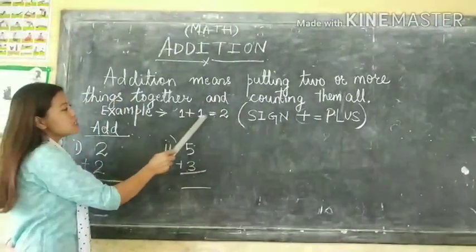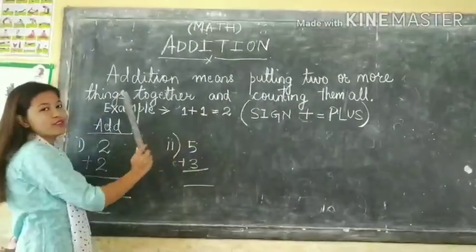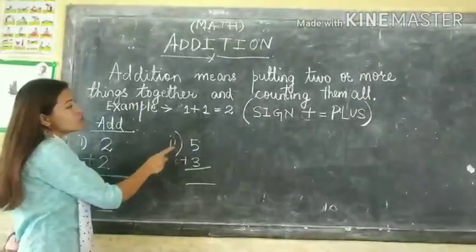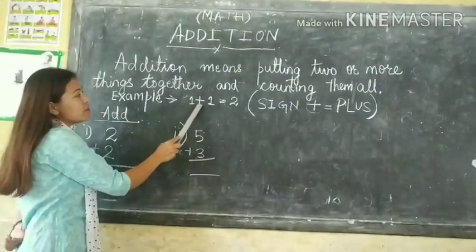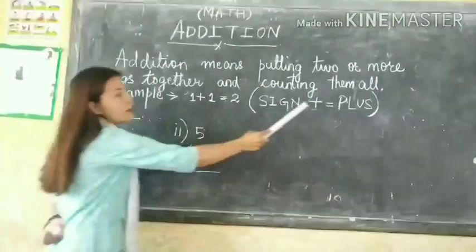For example, 1 plus 1 is 2. We are putting these two numbers together and we are getting 2. The sign for addition is called plus.